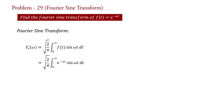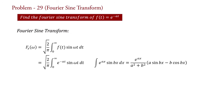Using the standard integral formula: integration of e raised to a x into sine(b x) dx equals e raised to a x upon (a squared plus b squared), into bracket a sine(b x) minus b cos(b x).